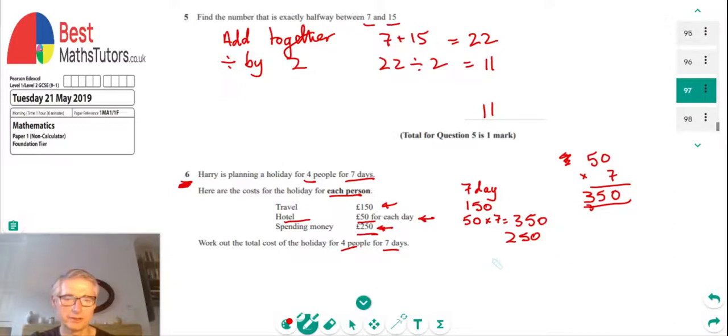I'll do that in columns and add up the zeros. I've got zero. 5 plus 5 plus 5 is going to be 15. Write down the 5, carry the 1 into the next column. And 1 plus 3 plus 2, that's 6, plus the 1 that I've carried makes 7. So that's 750, the cost for one person.